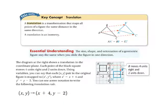That means I move X in a positive direction 4 units, and I move Y in a negative direction 2 units.